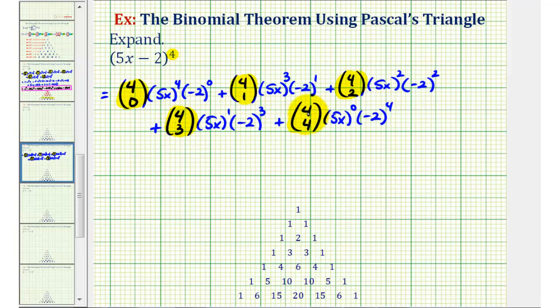Since the original binomial is raised to the fourth power, we can find the value of each combination in row 4 of Pascal's triangle, where the first row here is row 0. So we have row 0, row 1, row 2, row 3, and finally row 4.